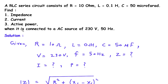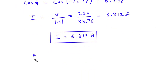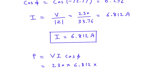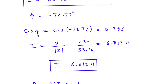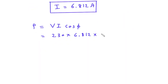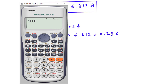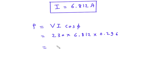Next we have to find active power. Active power P equals V I cos phi. The value of voltage is 230 volt, current is 6.812, and cos phi value is 0.296. So this will be 230 multiplied by 6.812 multiplied by 0.296, which gives P equal to 463.76 Watt.